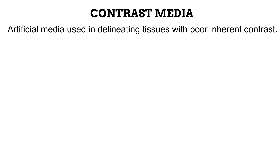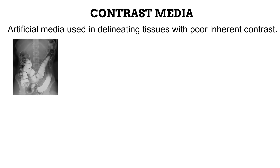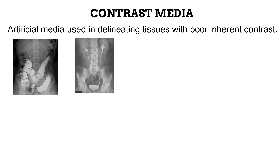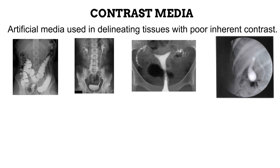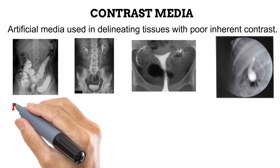Examples of parts that we commonly use contrast media for include the digestive system, the urinary system, the reproductive system, and the biliary system. There are many ways you can classify contrast media, and you will learn about these different ways in this video.